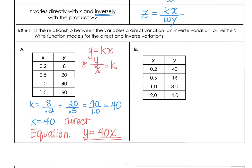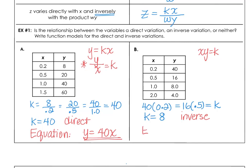In Part B, we test whether x times y equals a constant k. The products 40 times 0.2, 16 times 0.5, 1 times 8, and 2 times 4 all equal 8. So this is inverse variation with k equals 8. The equation is xy equals 8, or equivalently y equals 8 divided by x.